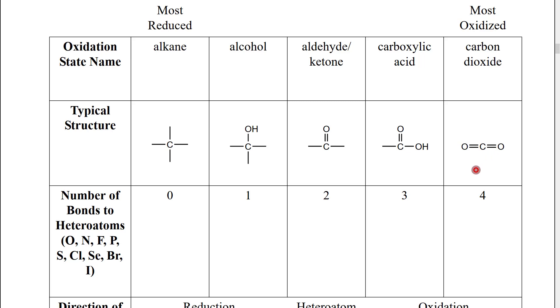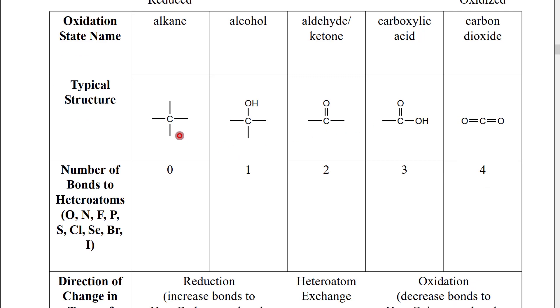What organic chemists have then done is they have correlated these structures to a particular functional group. So, for example, a carbon that has one bond to a heteroatom is considered to be at the alcohol oxidation state. In many cases, that heteroatom will be an oxygen OH, so it will actually be an alcohol. But we could also look at, for example, having a chlorine here, chlorine being a heteroatom. That would be at the same oxidation state as an alcohol.